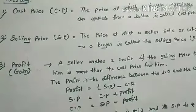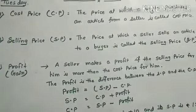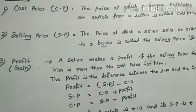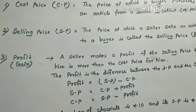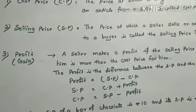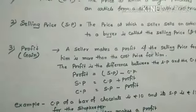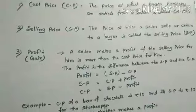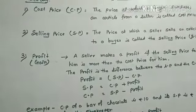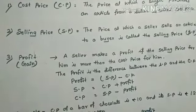A shopkeeper generally buys goods from a wholesaler and sells them to his customers. He buys things from the wholesaler at a certain price and sells them to his customers at another price. In this process, he either makes a profit or a loss.